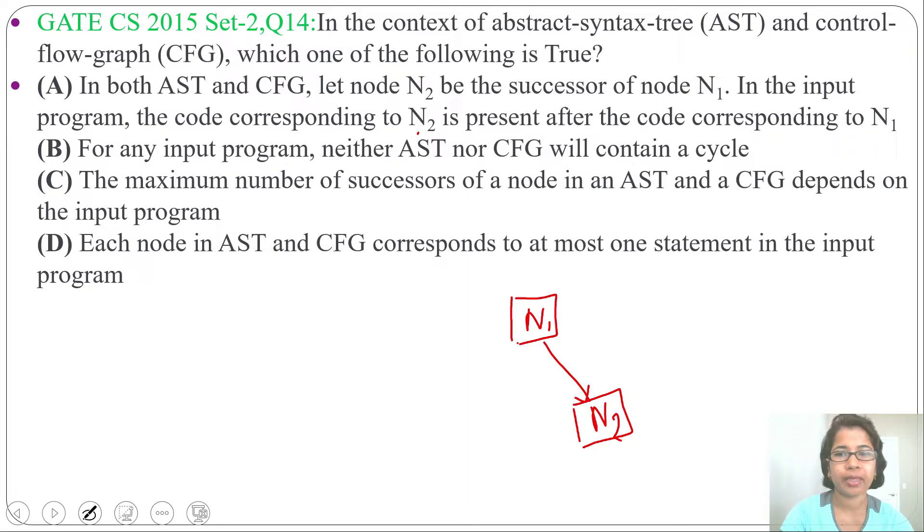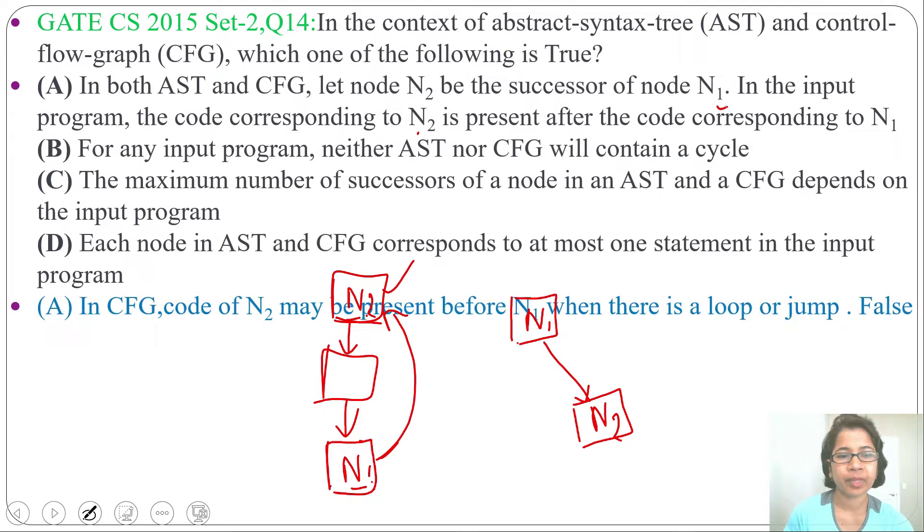In control flow graph, there is a possibility of cycle and jump. If n1 would contain a jump to n2 node, then n2 will be n1 successor. But n2 code is written before n1, not after n1. So it is not always true, this is false. In control flow graph, code of n2 may be present before n1 when there is a loop or jump. So option A is false.